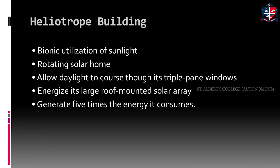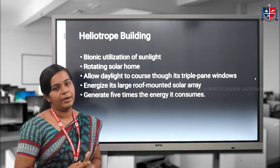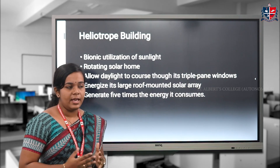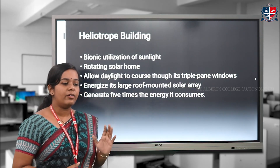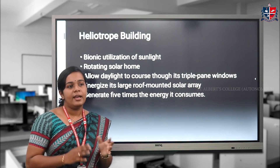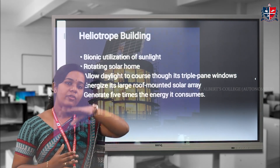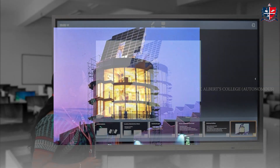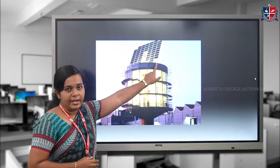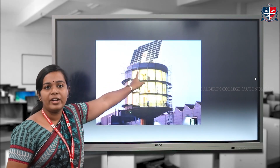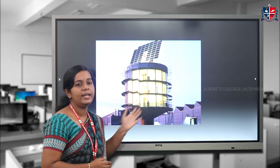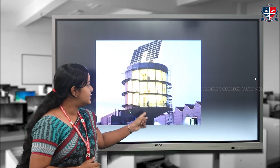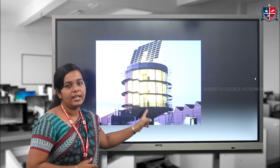One type of bionic architecture is the heliotrope building. The word heliotrope means self-rotating buildings. These buildings are provided with a tracking system that aligns to the direction of sunlight. A series of solar arrays are mounted on top of these buildings, and the whole building tracks the position of sunlight throughout the day.